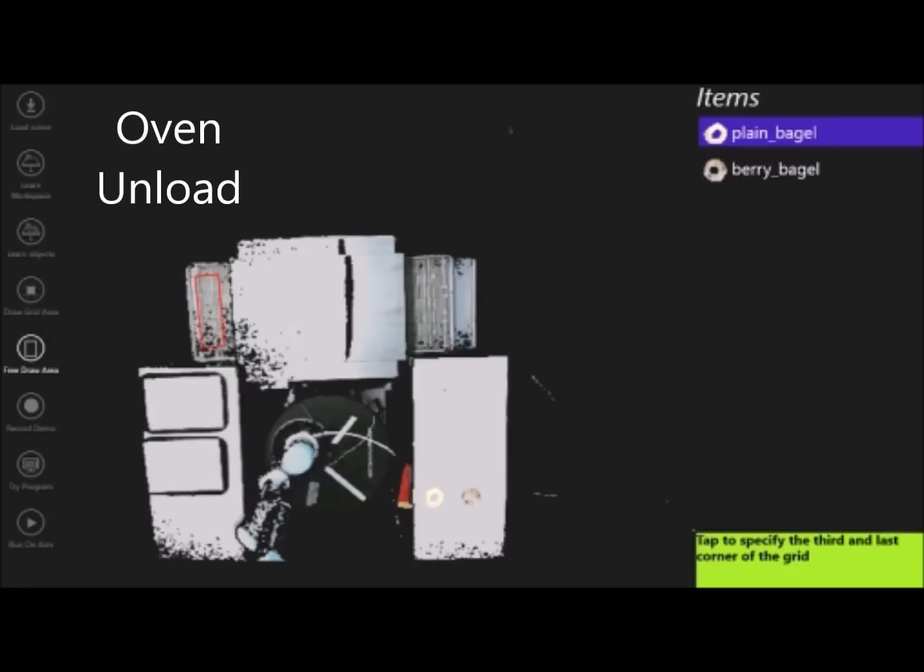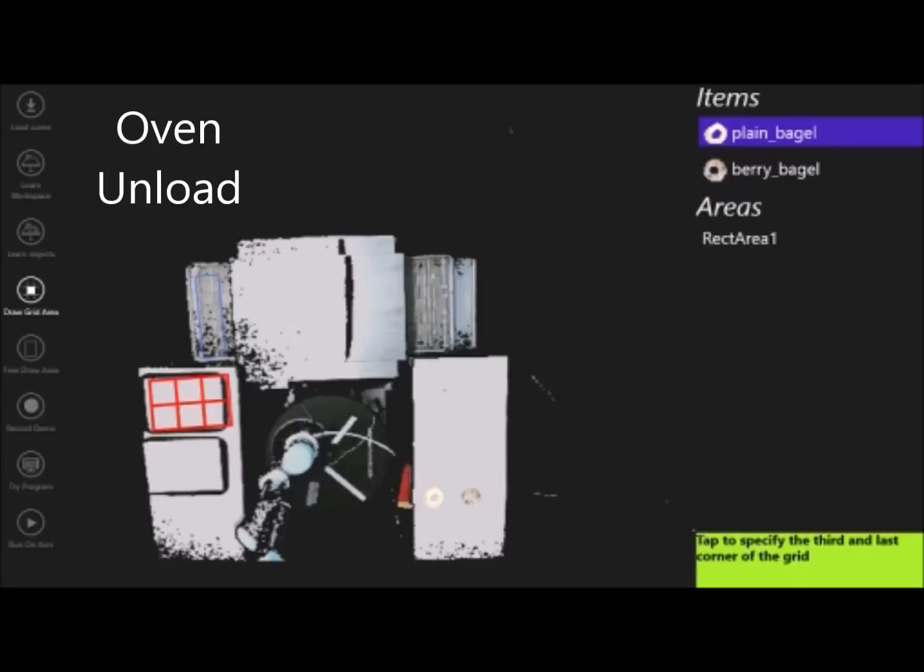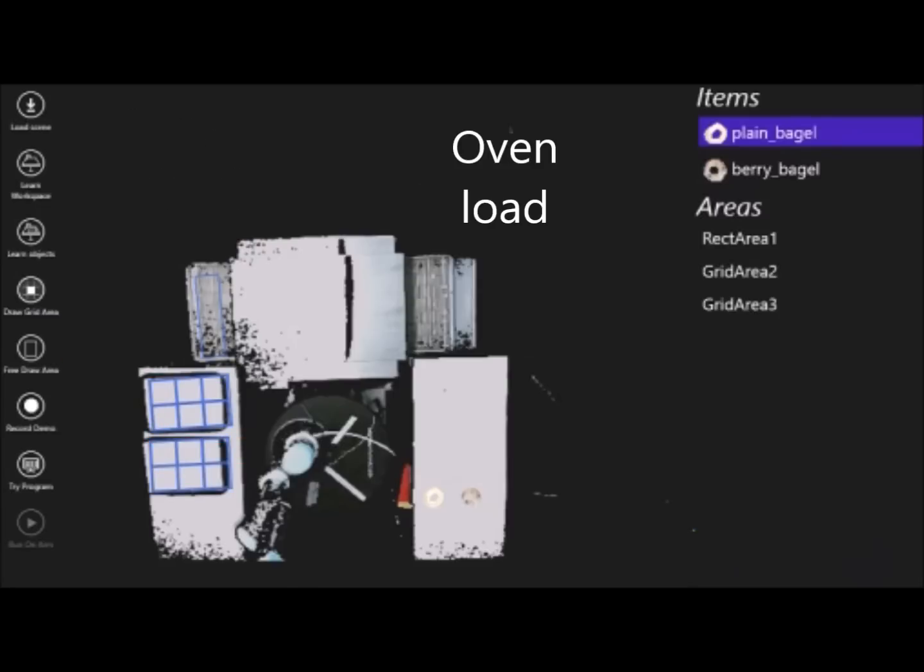The next step is for the baker to demarcate regions of interest. The first region indicated is the pickup rectangle at the exit of the oven. Then grids are added to indicate where the baked bagels should be moved and arranged in rows. One grid is for the berry bagels and the other for the plain bagels.